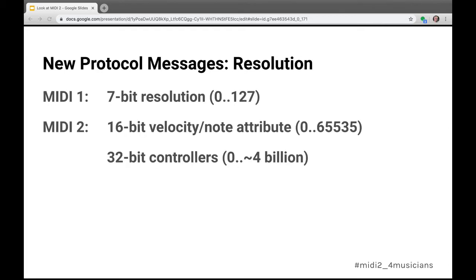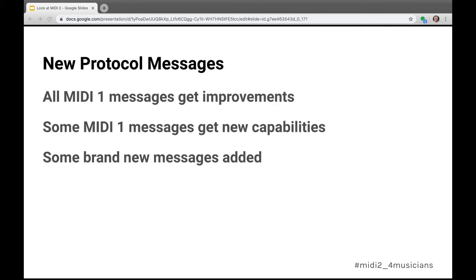In MIDI 1, the maximum resolution on most messages was 7 bits (0–127), or 14 bits on pitch bend. In MIDI 2, that changes dramatically. Velocity on note-on and note-off goes up to 16-bit (64K steps). All controllers go from 127 steps up to 4 billion steps — 32-bit control space — which allows for far more expressive systems. All MIDI 1 message counterparts get improvements, some gain new capabilities, and brand new messages are added to the standard.